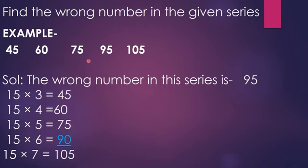All the numbers are followed by 15's table except this one. There must be 90. So this is wrong, except all are right. The wrong number in this series is 95. Got it, children? I hope you have understood it.